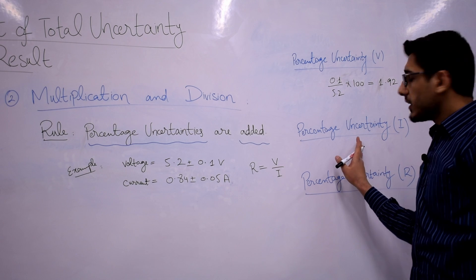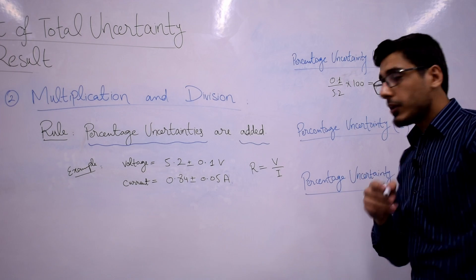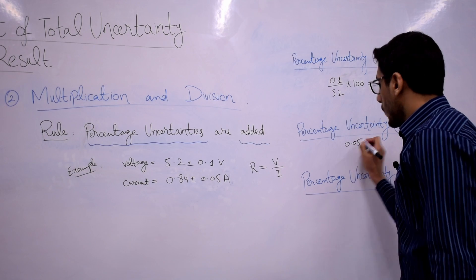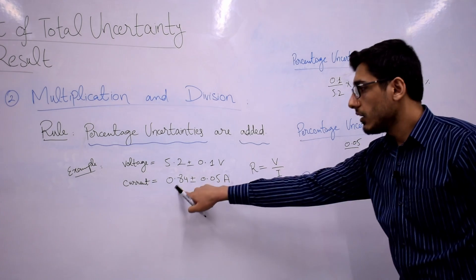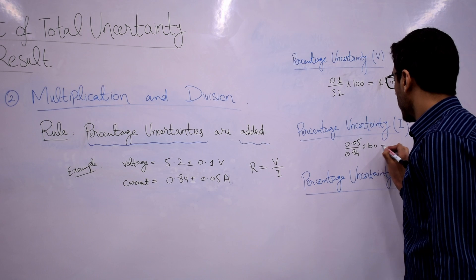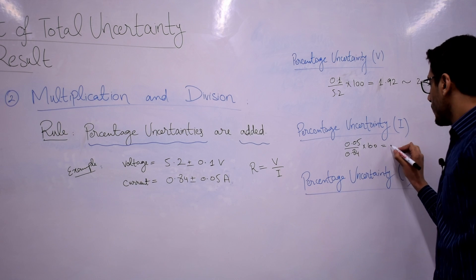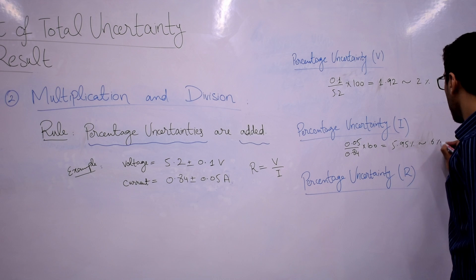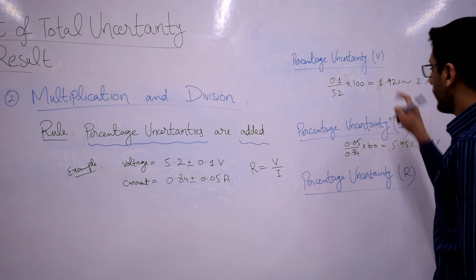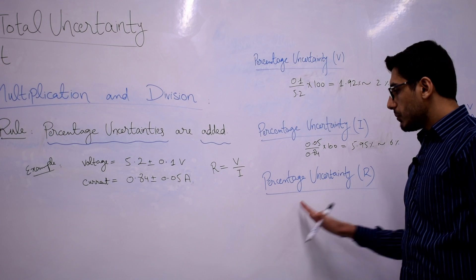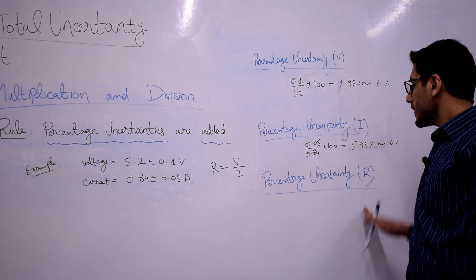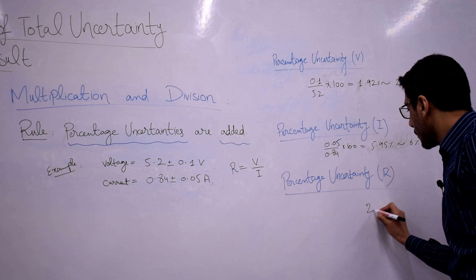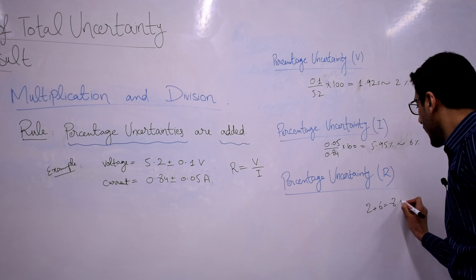Similarly, I will calculate the percentage uncertainty for current — I would recommend you do it with me right now. The formula is: absolute uncertainty of the ammeter divided by your measurement, multiplied by 100. The result is 5.95%, and let's approximate it as 6%. By applying the rule, the percentage uncertainty in R is going to be the addition of percentage uncertainty in voltage and current, which is approximately 2 + 6 = 8%.